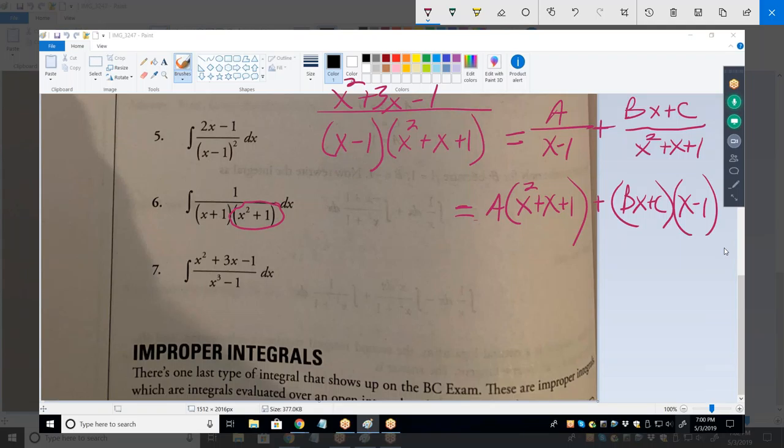So, now, when we move this equal sign a little bit to the left, we have A times X squared plus X plus 1 plus BX plus C times X minus 1. And all of that's equal to the numerator on the other side. In other words, we've taken the denominator out of it at this point. What's the next step?